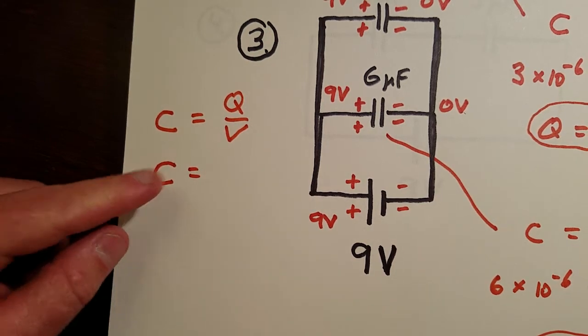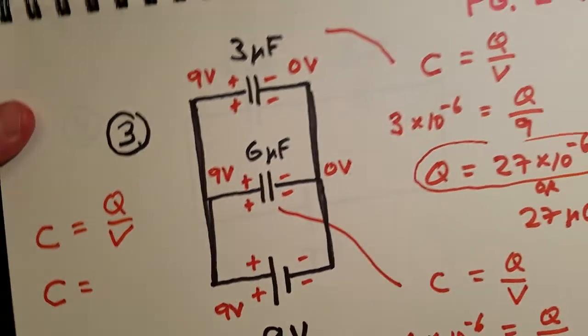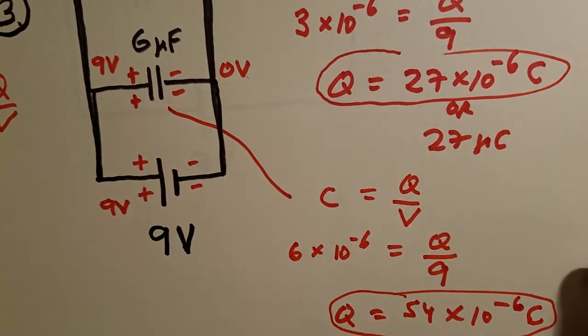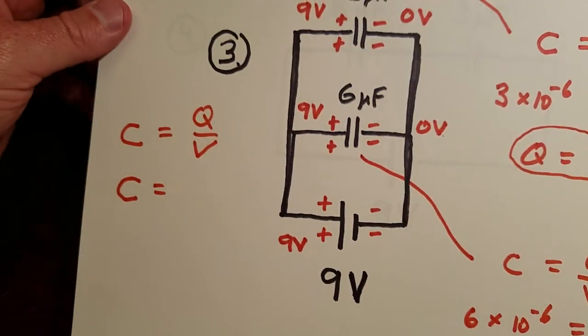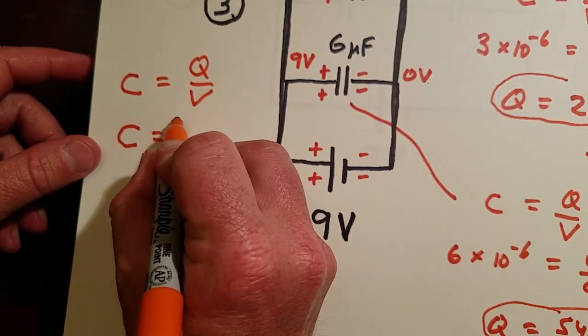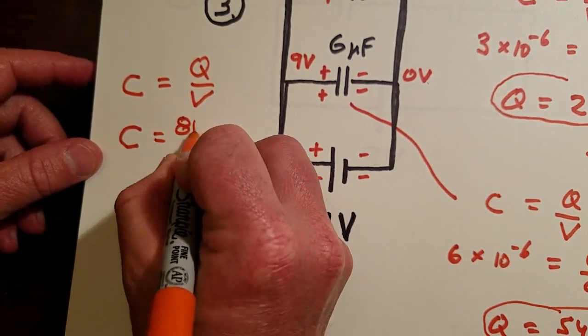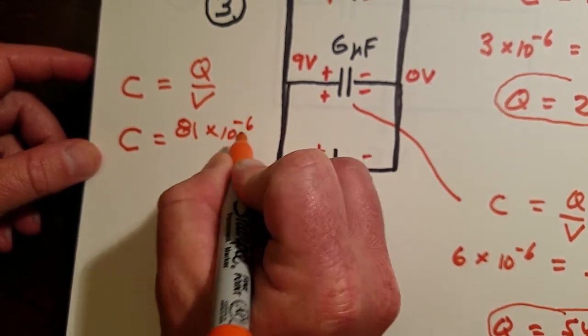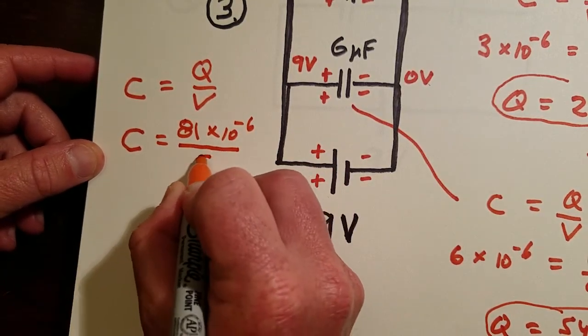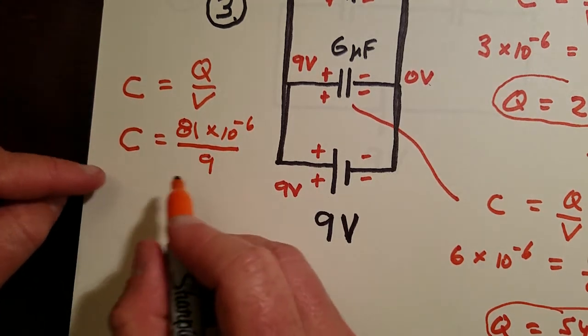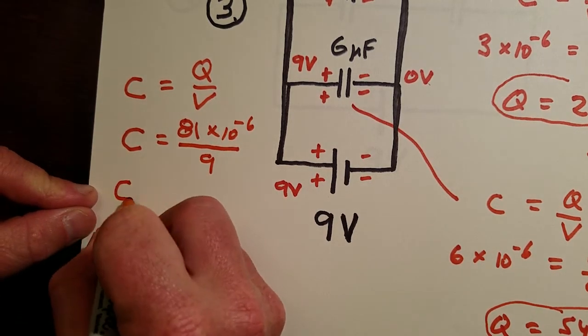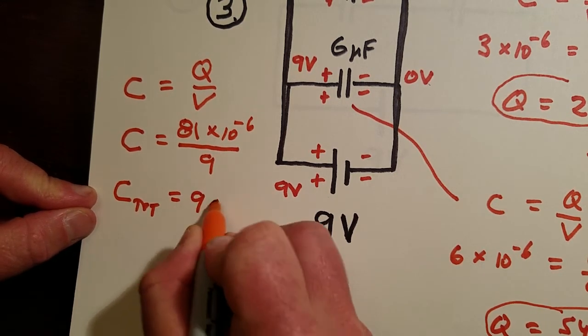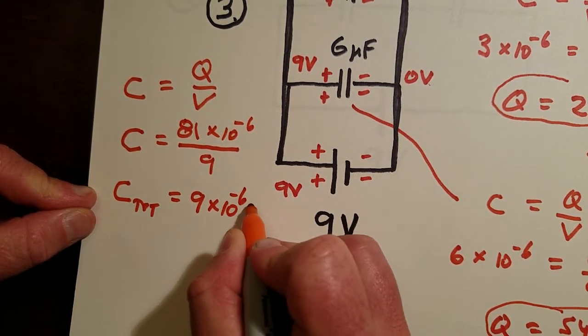Unless you've seen this stuff before, the total charge is the charge on the top one plus the charge on the bottom one. So it's going to be twenty seven plus fifty four micro coulombs, which is going to make 81. So you're going to have 81 times ten to minus six coulombs over nine volts. And so what you end up learning then is the total capacitance C total is 81 over nine, or nine times ten to minus six farads.